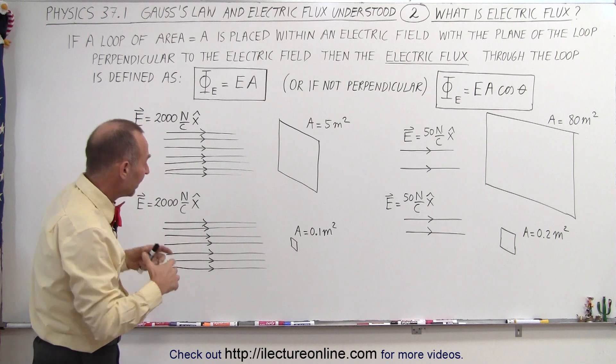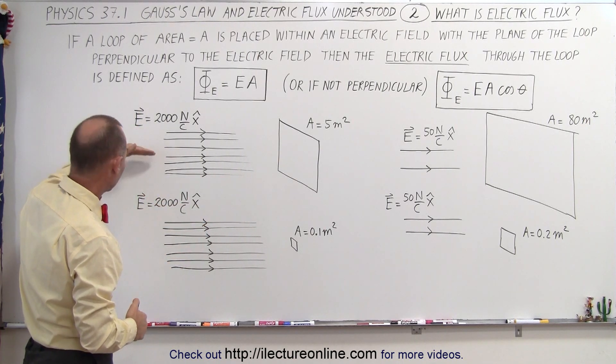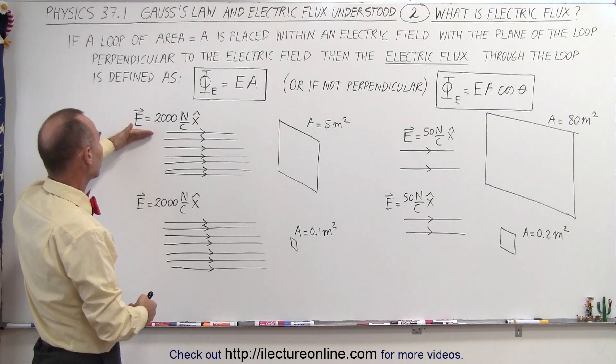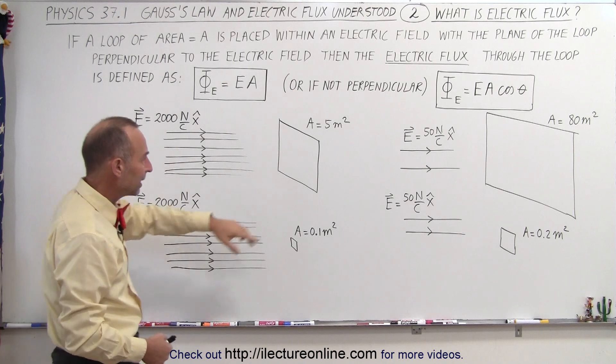Now, to get a feel for it, let's have some examples where we have a couple of electric fields, one that has a strength of 2,000 N per Coulomb and is pointed in the x-direction,